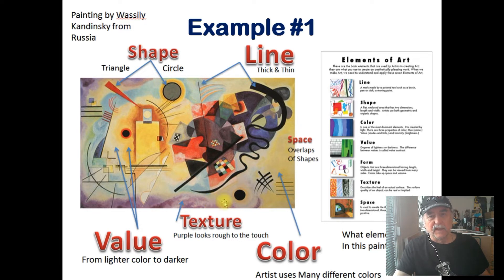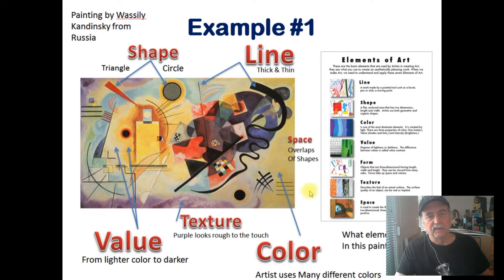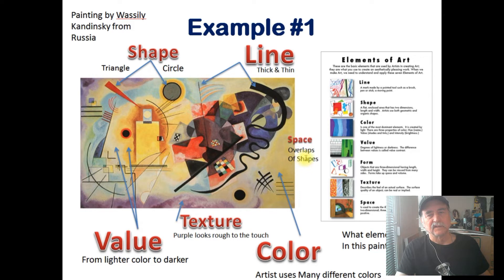We can ask ourselves: what art element is not in this painting? We can see that there's not a lot of form — three-dimensional images. We don't see cubes; the closest we come is in one area that starts to look a little three-dimensional. We do have space, however, created here by overlapping shapes. So this is a pretty good example of the art elements in a very well-known and famous piece of art.